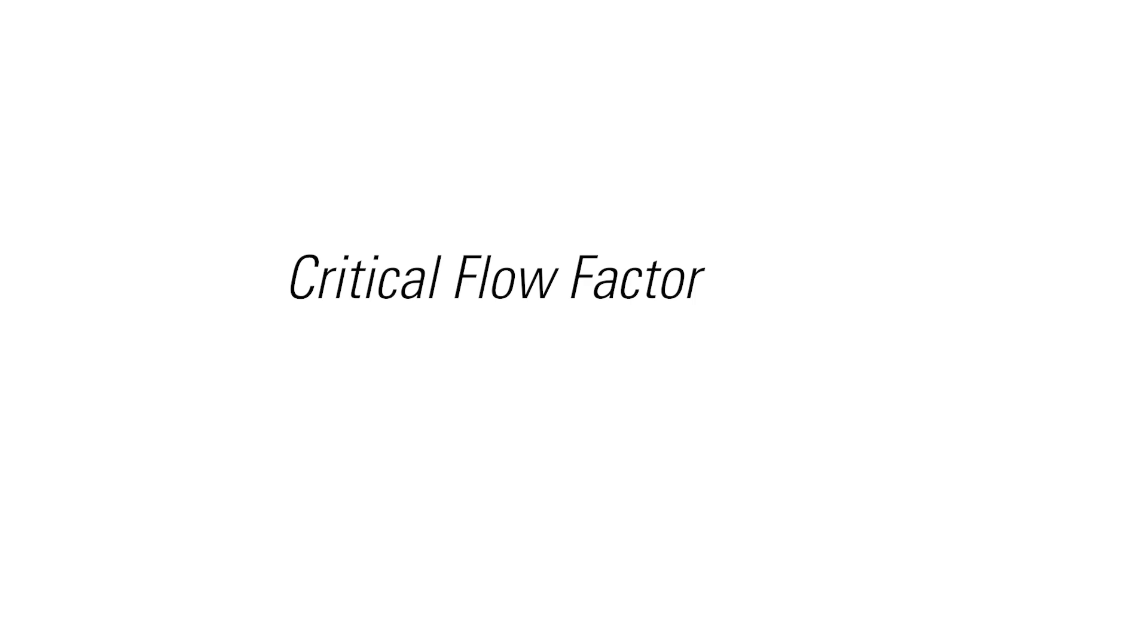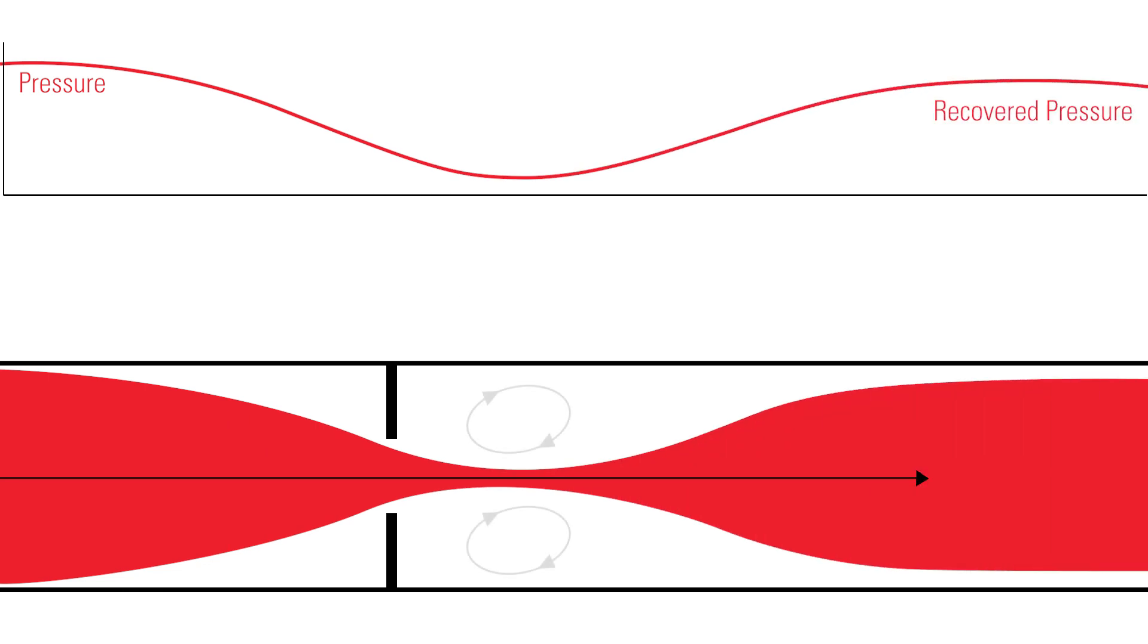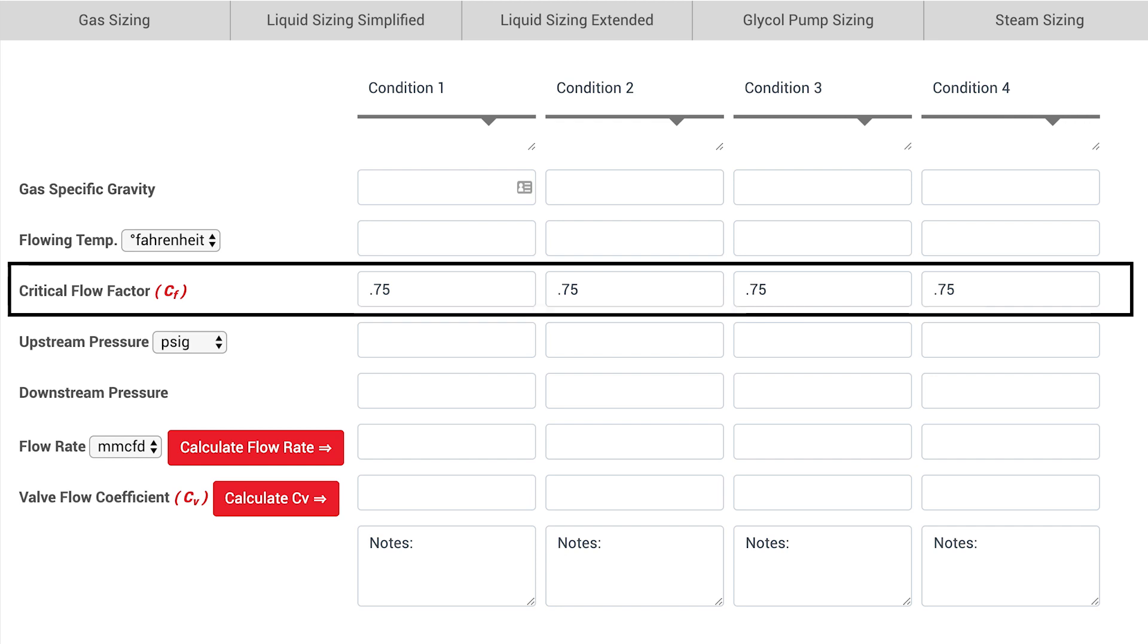Critical flow factor, often referred to as CF, is a coefficient that defines how pressure will recover after it drops to its lowest point inside the control valve. CF is needed in order to calculate flow coefficient and volume flow rate for valve sizing purposes.